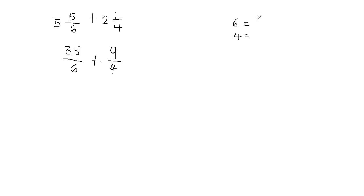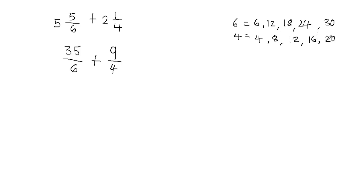The multiples of 6 are going to be 6, 12, 18, 24, 30, and so on. And the multiples of 4 are going to be 4, 8, 12, 16, 20, and so on. I'm looking for the least common multiple — the multiple which is common in both and which is the smallest. The smallest number common in both is 12, so I'm going to circle it. The least common multiple is 12.